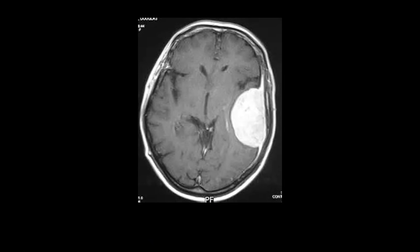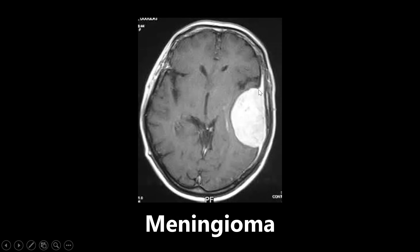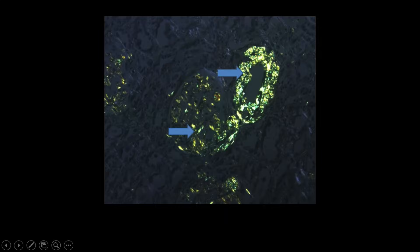This next one is a CT scan depicting meningioma. It's a brain tumor that you can see continues with the meninges here. You see the white stripes on either side of the tumor here. So whenever you see something like that, don't confuse it for a brain bleed. This is going to be a tumor, and it's going to be a meningioma because of this continuity with the meninges of the brain.